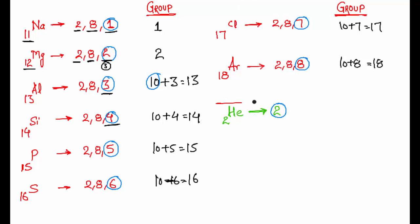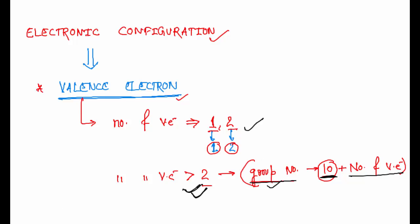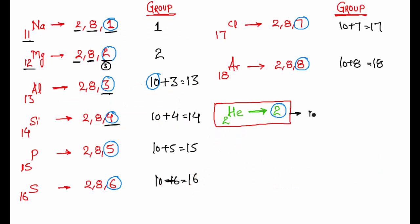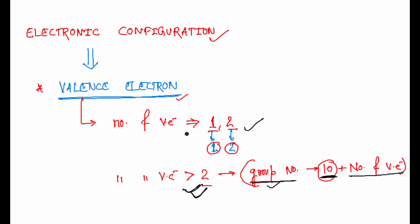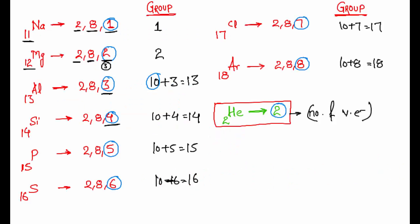Now, why have I written helium separately? It's very important. If you stick strictly to this rule, you would say helium is in group 2 because its valence electrons are 2. But you cannot put helium in group 2 — those elements are very reactive metals, whereas helium is a noble gas. So helium is an exception; its group is group 18.